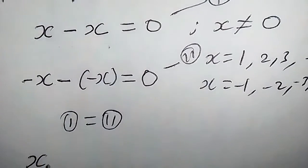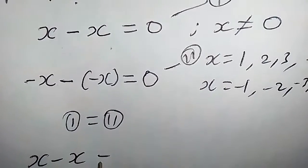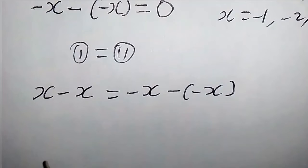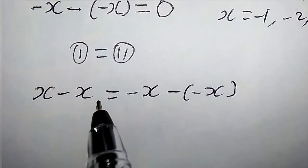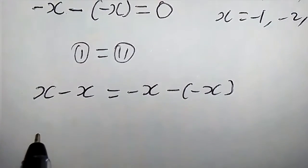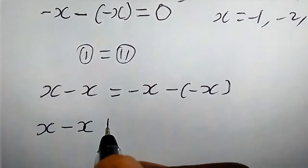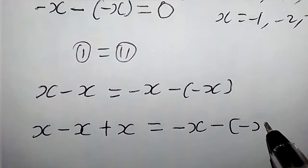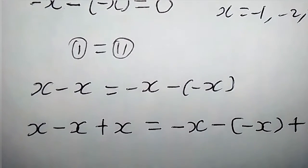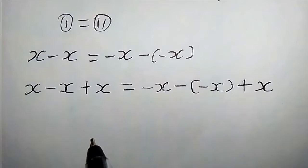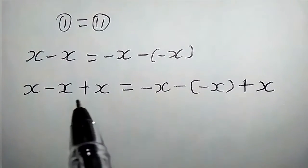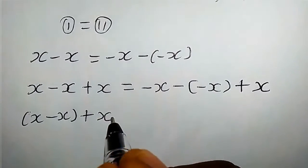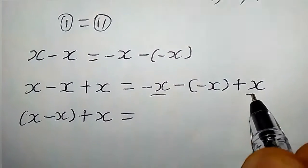Now suppose we equate equation 1 and equation 2. So we're going to have x minus x equals minus x minus into minus x. Now let's add x to both sides of these equations, so we're going to have x minus x plus x equals minus x minus into minus x plus x. Of course nothing has changed, so now let's rearrange these equations.